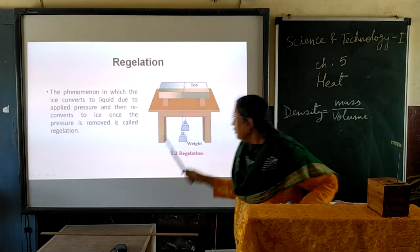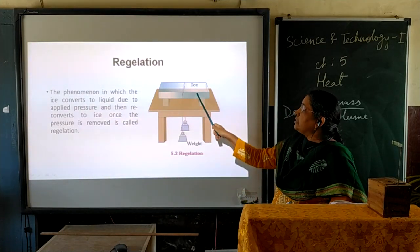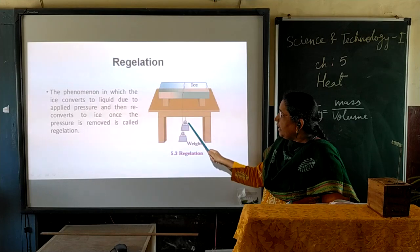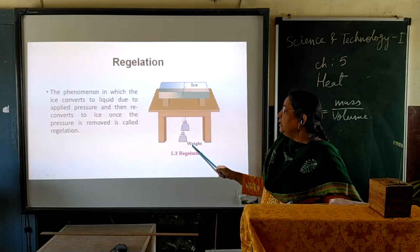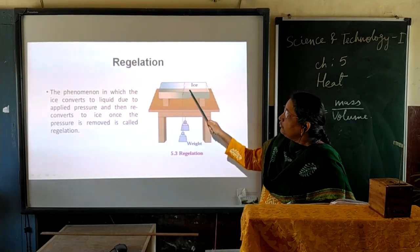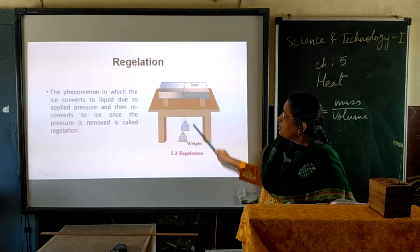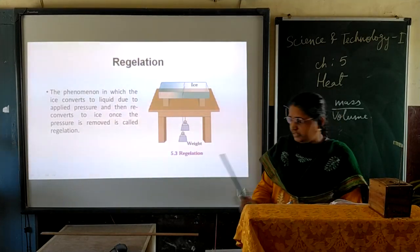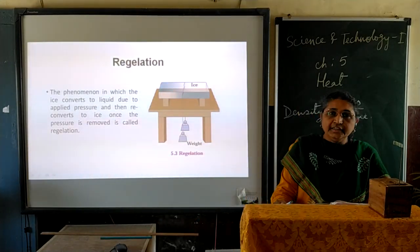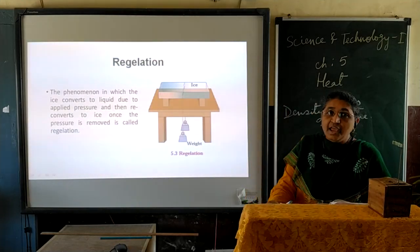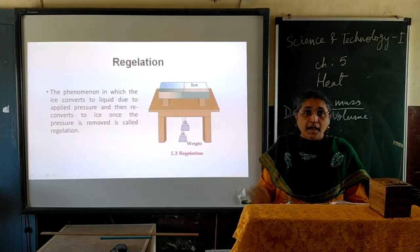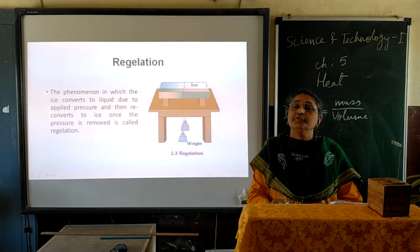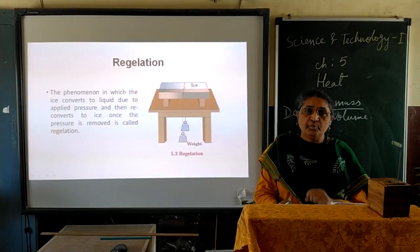In this activity, we have taken a table with an ice slab on it. On this slab we placed a metallic wire, and at both ends of the metallic wire we tied weights. Due to the pressure applied by the weights, the ice melts and gets converted into water. As it converts into water, the metallic wire passes through the ice slab. After passing through, the water converts back into ice. This happens due to the phenomenon of regelation.